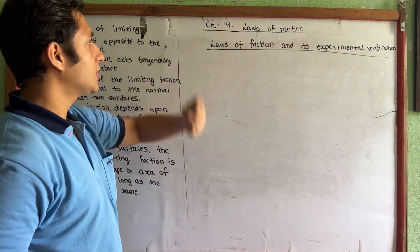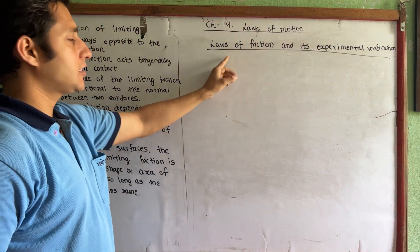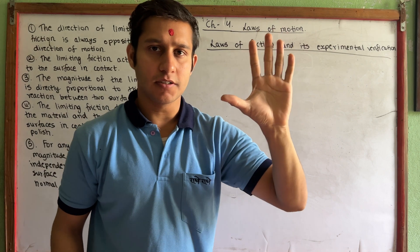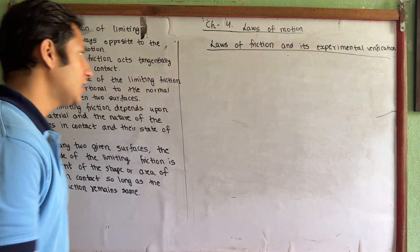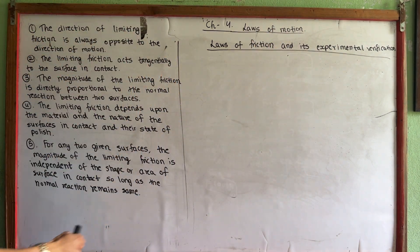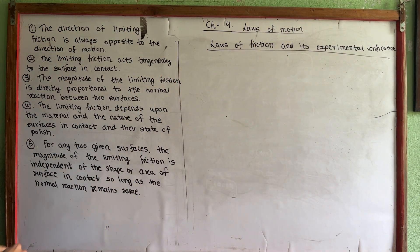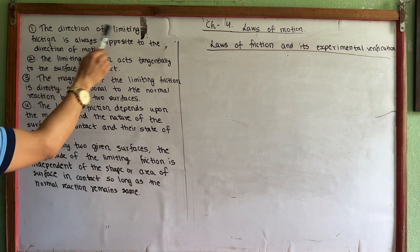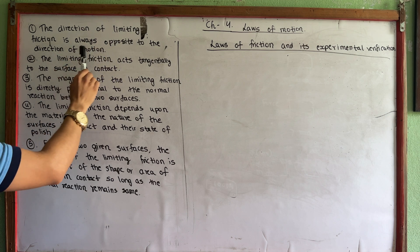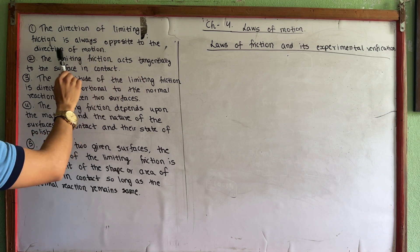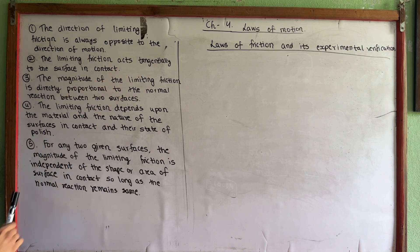Here we have the laws of friction. The first law: the direction of limiting friction is always opposite to the direction of motion.